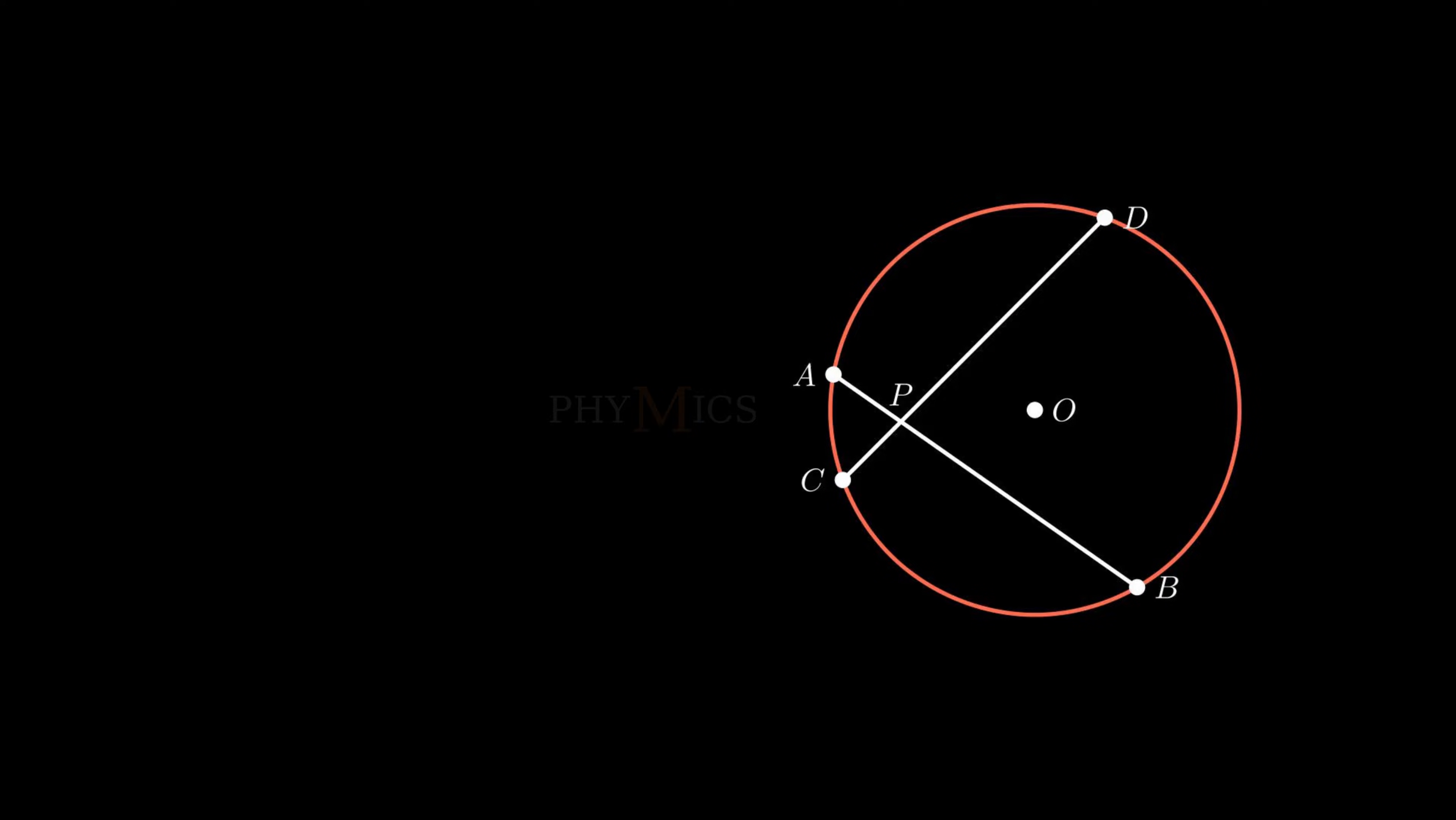Let point P be the point of intersection of these two equal chords. We need to show that the segments of one chord is equal to the corresponding segments of the other chord.